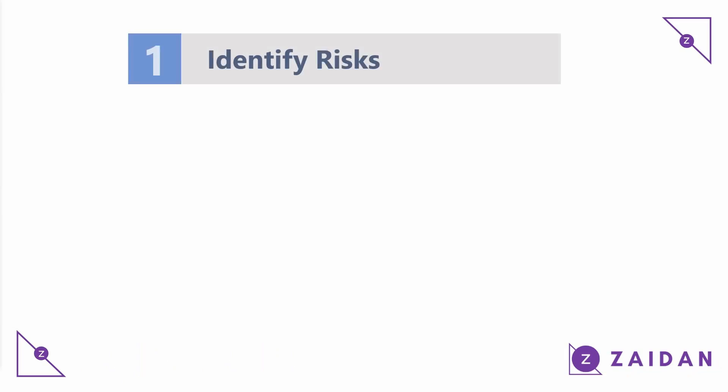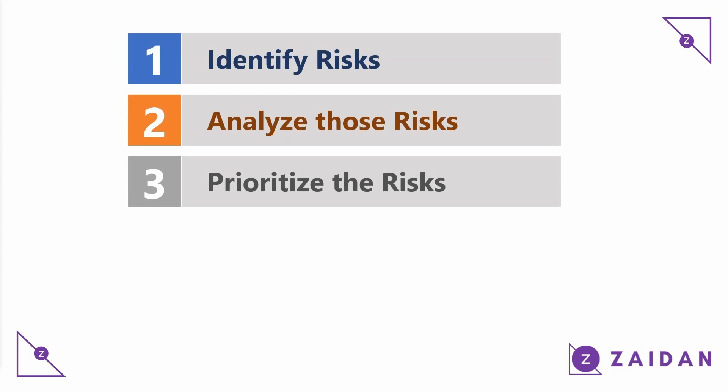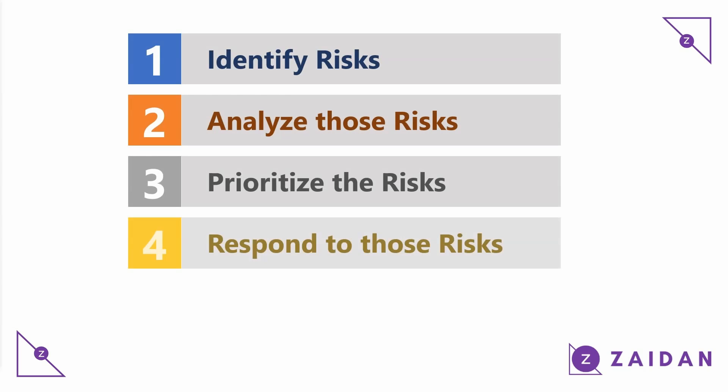We can summarize risk management in projects easily in five steps: Identify, Analyze, Prioritize, Respond, Monitor. Let us go through them one by one.